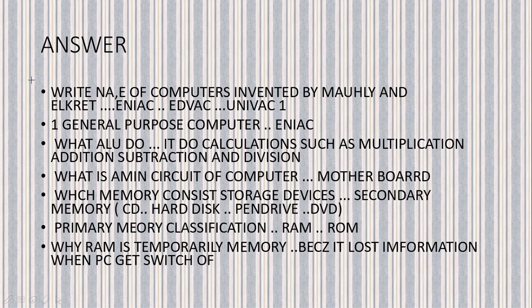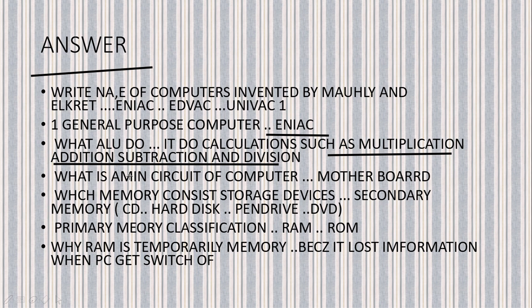Now answer the following questions. The name of the computer invented by Mauchly and Eckert — as I told you, they made three computers: ENIAC, EDVAC, and UNIVAC. The first general purpose computer was ENIAC. What does ALU do? ALU performs all calculations such as multiplication, addition, subtraction, and division. What is the main circuit of the computer? Motherboard is the main circuit of the computer.